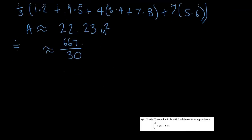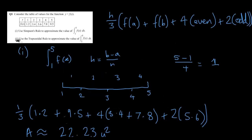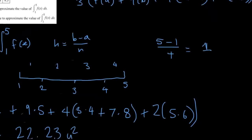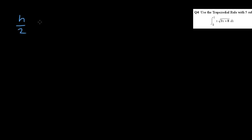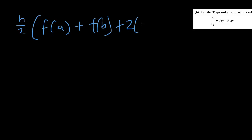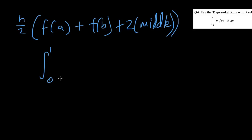Moving on — I've actually skipped the question before this one, which you can do on your own time. There is a question I want to go through that doesn't have the same format, and you're most likely to get it in a test as well. This question asks for the trapezoidal rule. The trapezoidal rule formula is H over 2, bracket F(A) plus F(B) plus 2 times the middle. Now I'll show you how to do it without a table given to you. You're given the limits 1 and 0 with the integral of x times the square root of (3x + 8) dx.